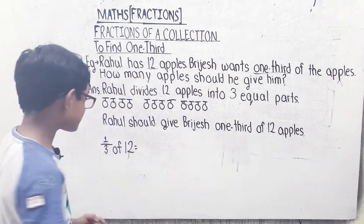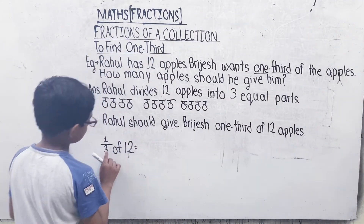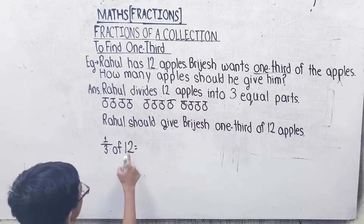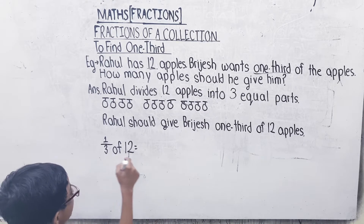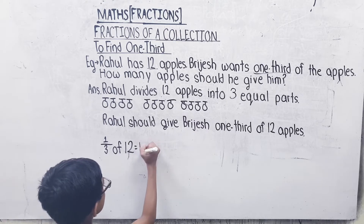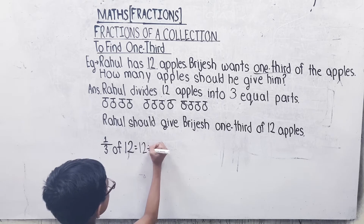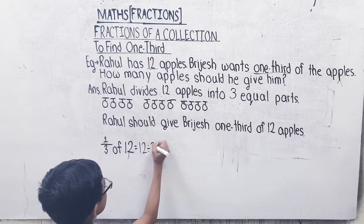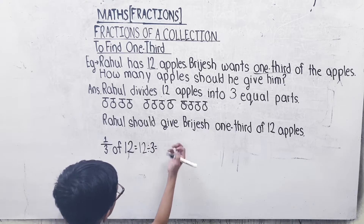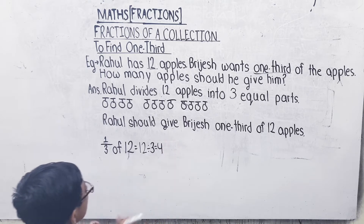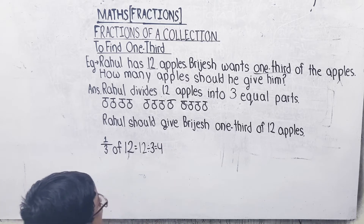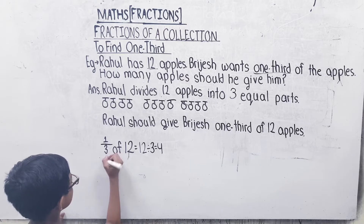So the answer: we will divide 1/3 of 12, that is 12 divided by 3. 3 times 1 is 3, 3 times 2 is 6, 3 times 3 is 9, 3 times 4 is 12. So Rahul should give 4 apples to Bridges.